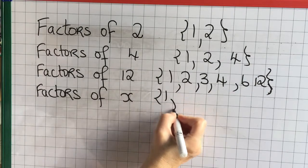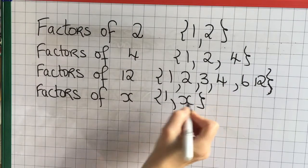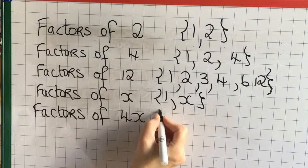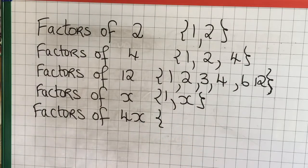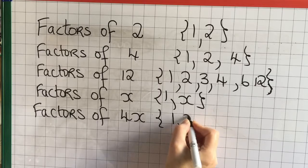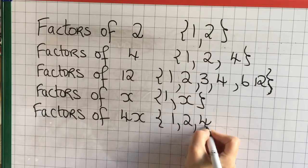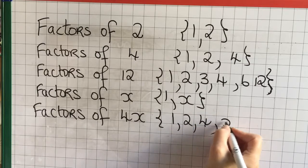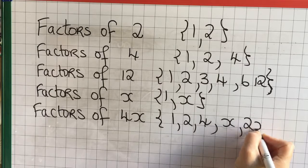The factors of x are 1 and itself. Factors of 4x, well we've got the factors of 4 written above: 1, 2 and 4. So of 4x we also have 1x, 2x and 4x.